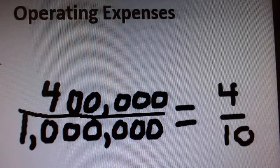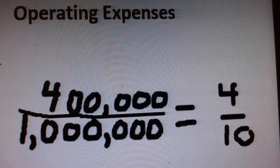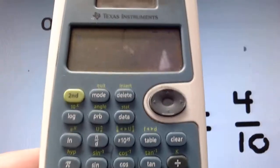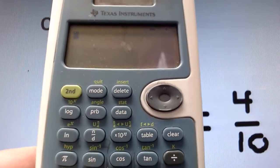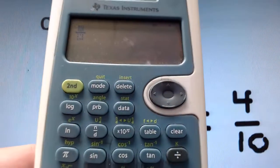So 400,000 over a million in simplest form is simply 4 over 10. You can also, in the TI-30XS, use the N over D button located right here and write it as a fraction.